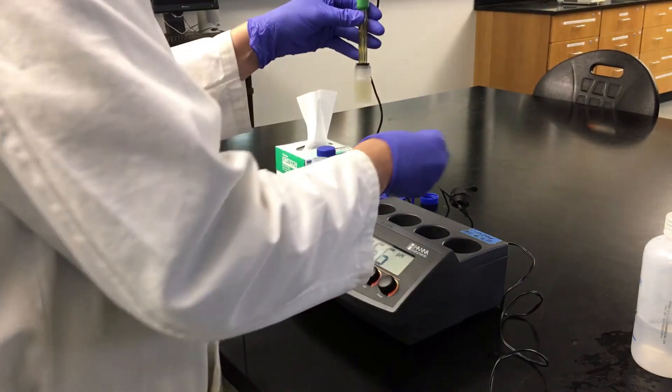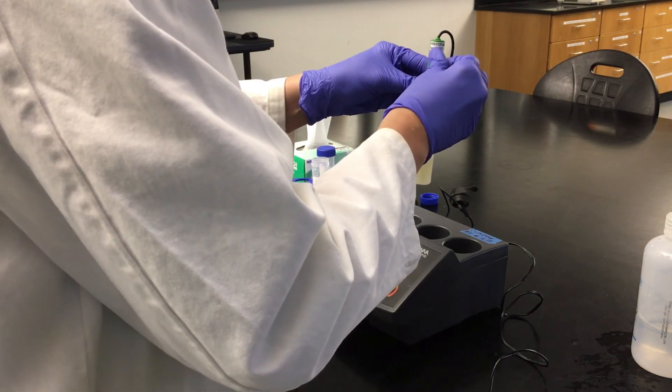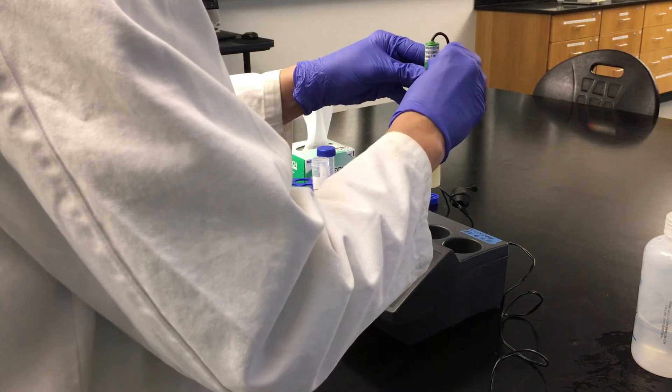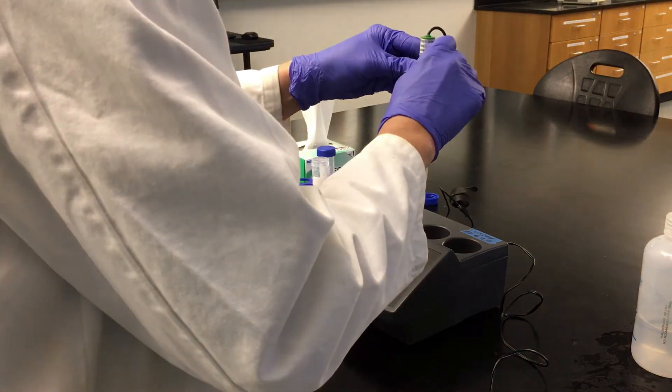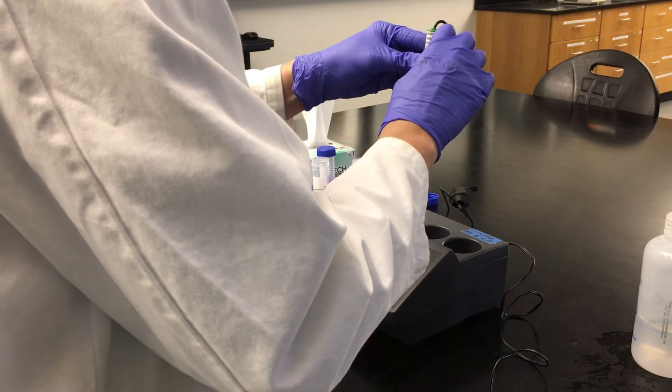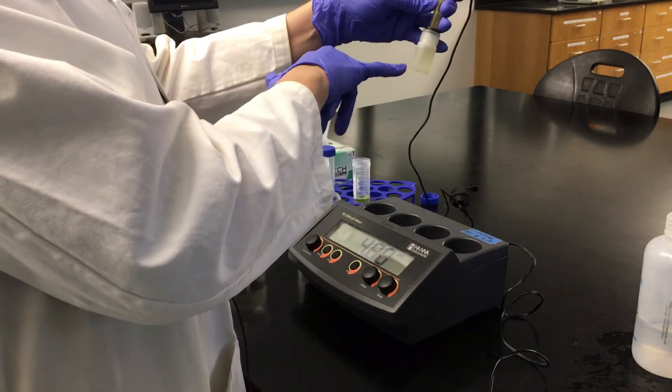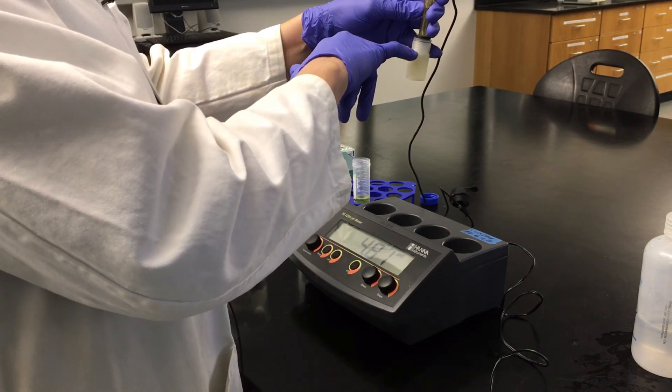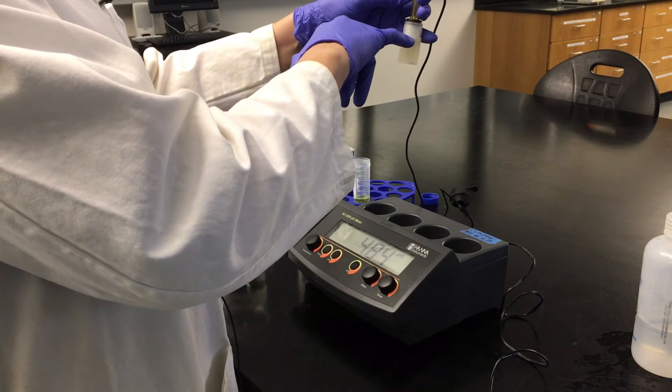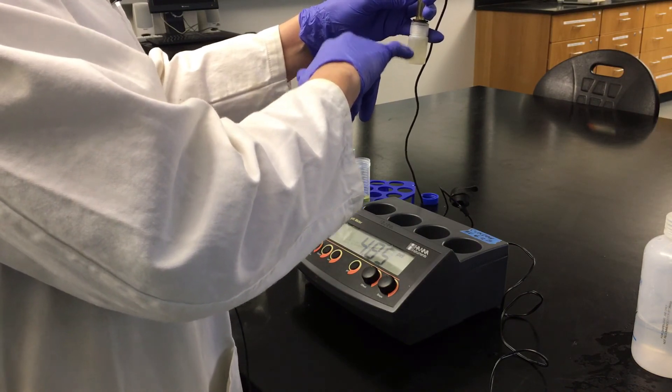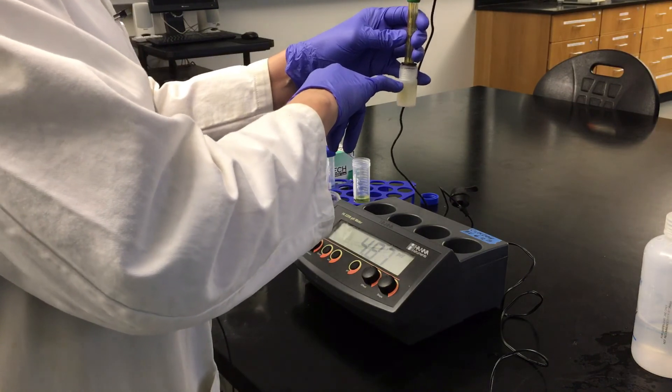Return the cover to the fill port. Make sure that there's enough solution in here that covers both the bulb and the junction. If for some reason this bottle has spilled or you've lost some solution, we're going to need to refill it.